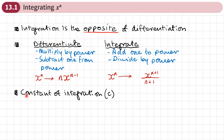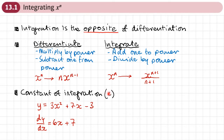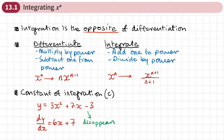Now there's something else we need to know about, and it's called a constant of integration. We normally use the letter C to represent it. To see why we need this plus C, let's look at what happens when we differentiate. If I started with the quadratic y equals 3x squared plus 7x minus 3 and differentiated it, I'd get 6x plus 7. Can you see that the negative 3 disappears? Whenever we have any constants, when we differentiate, the constants disappear.